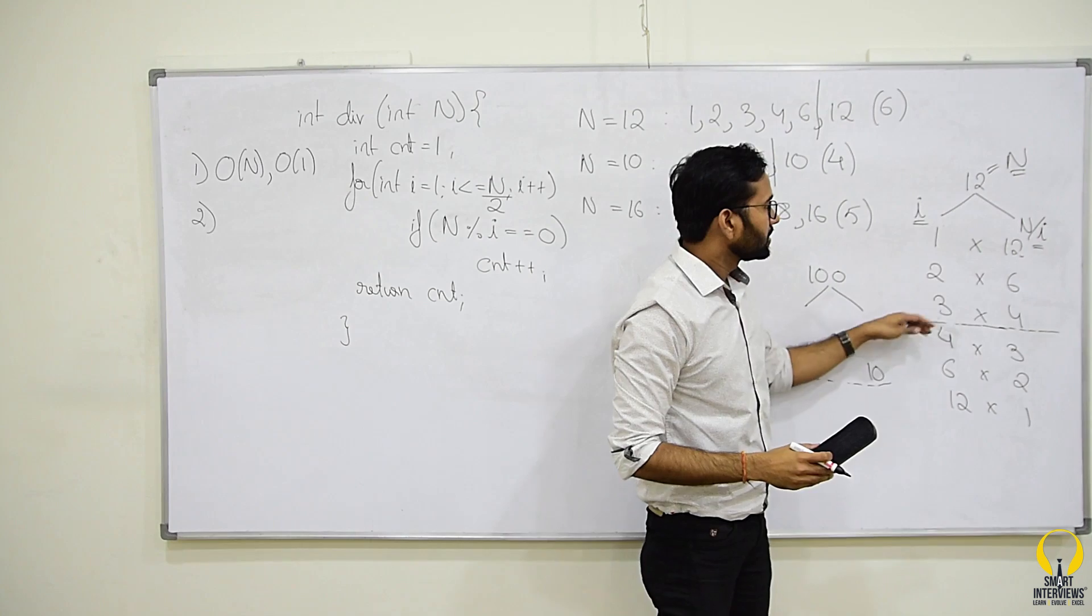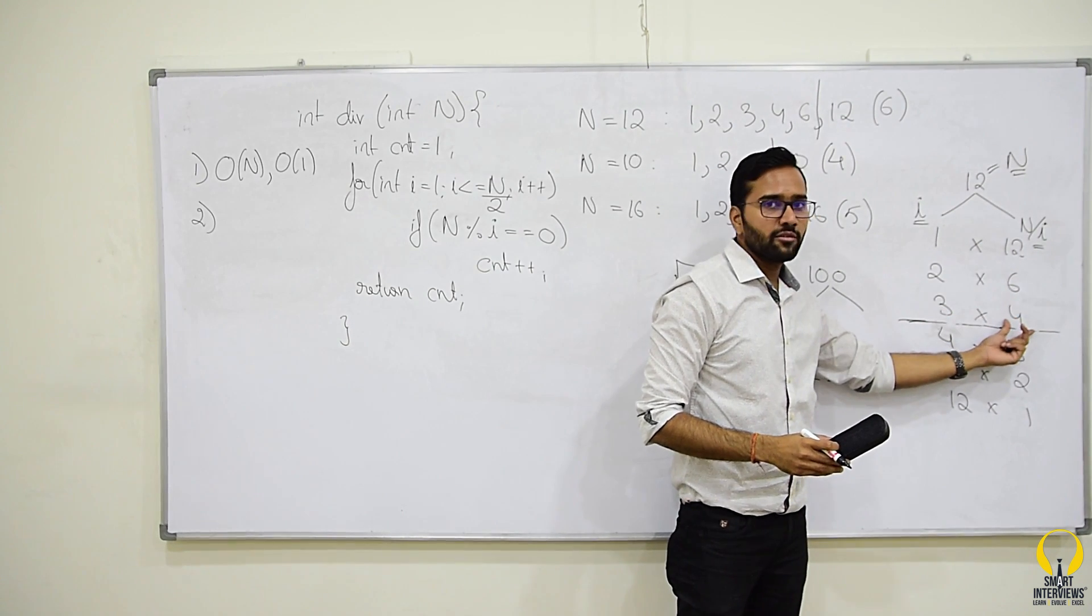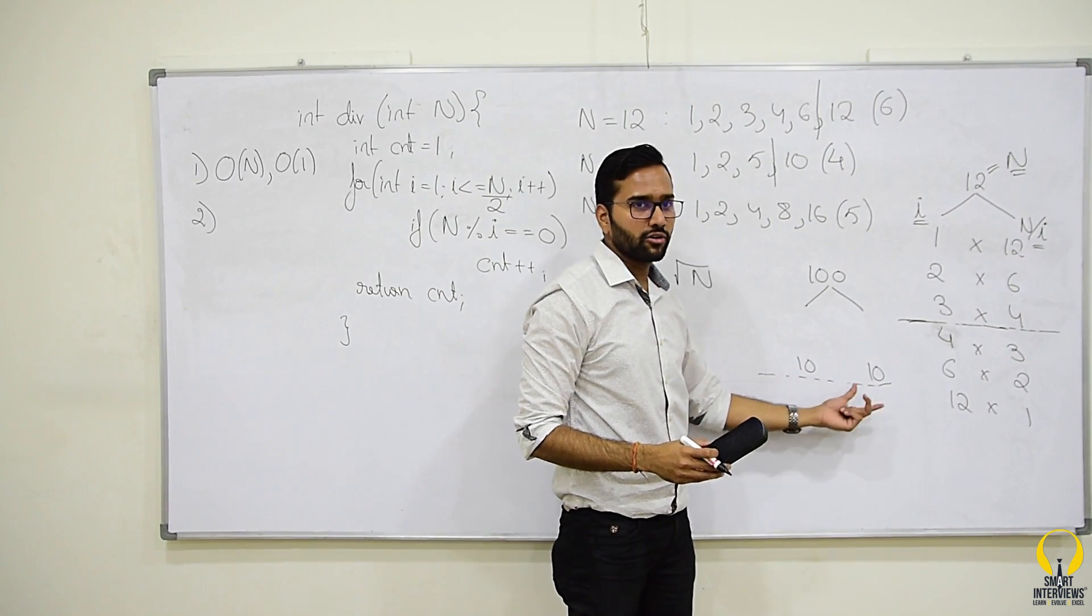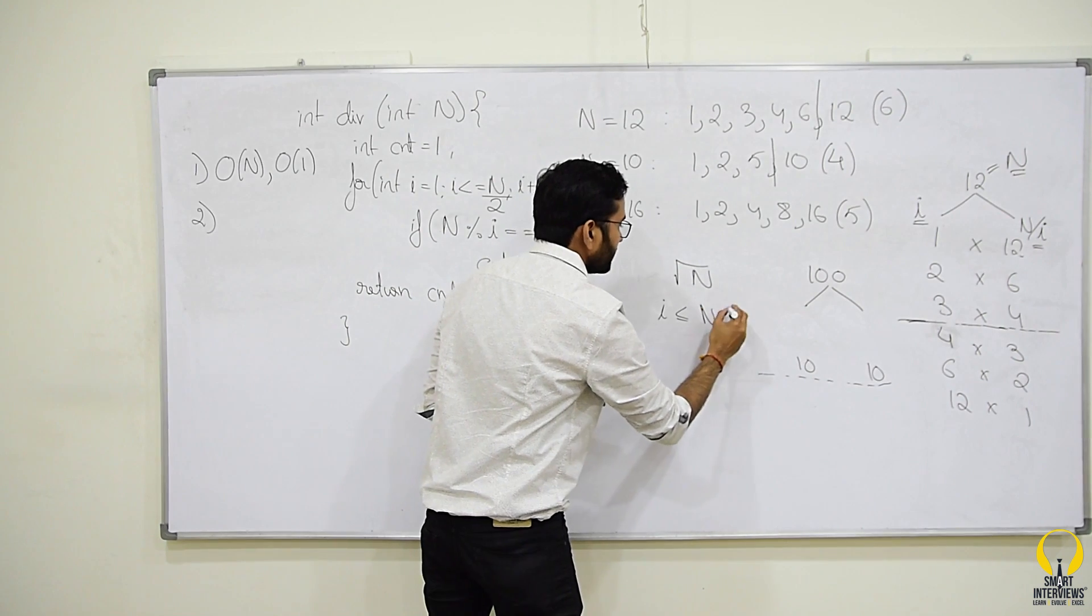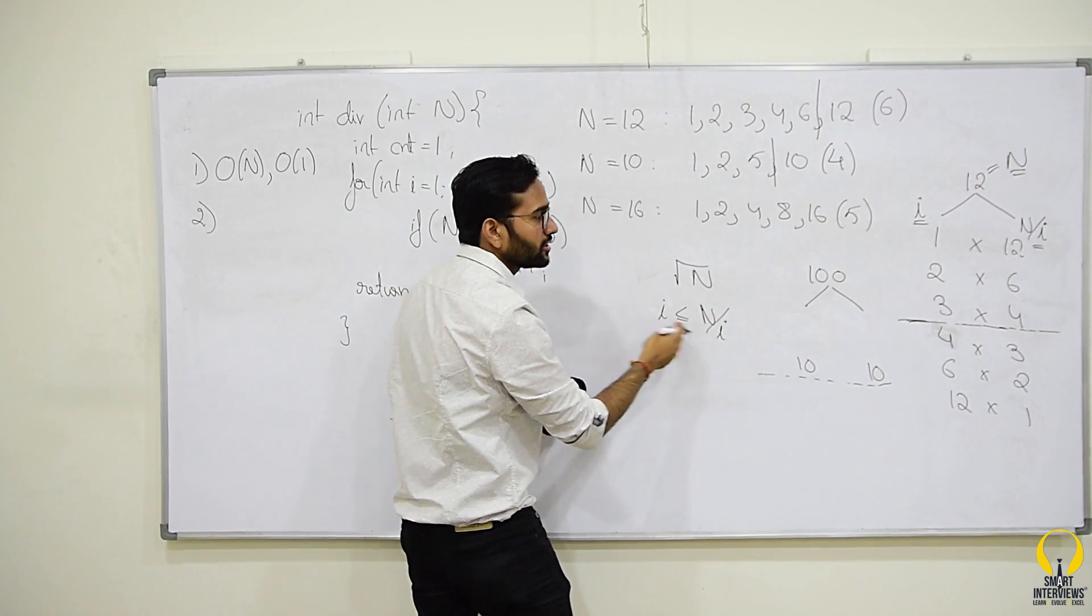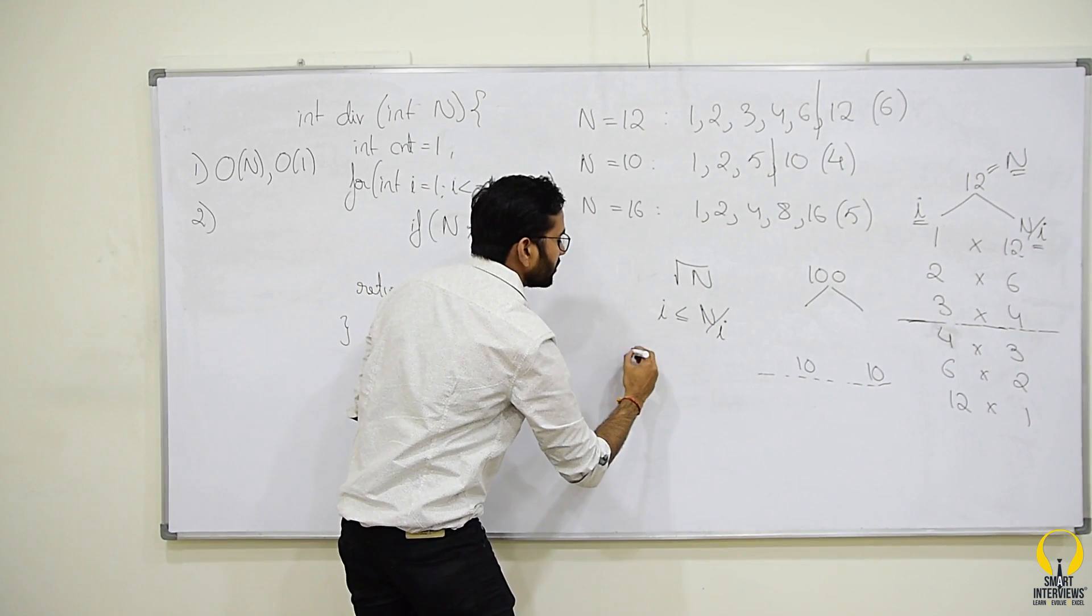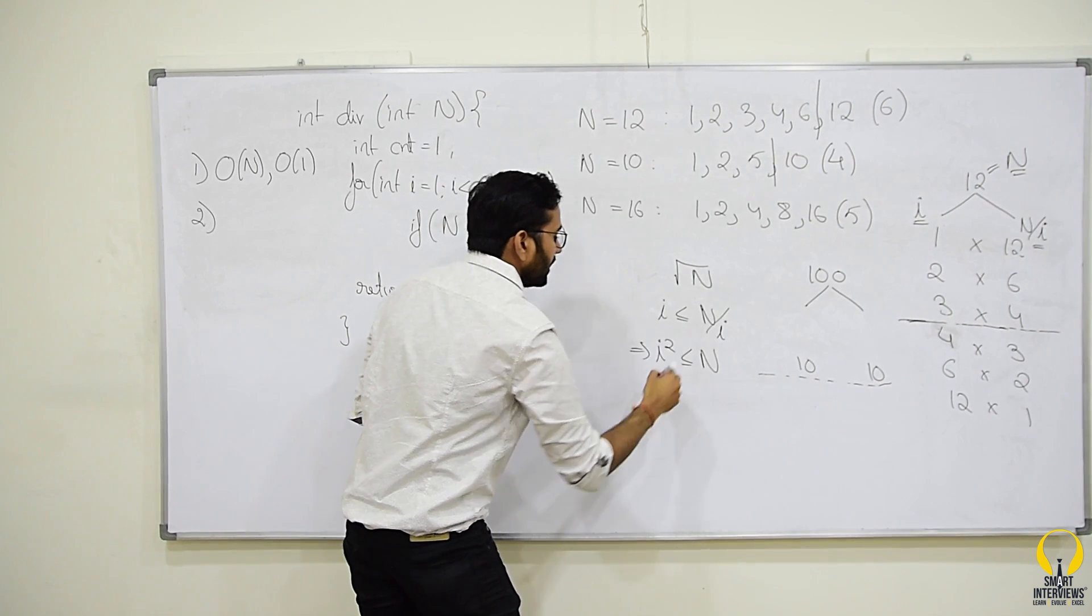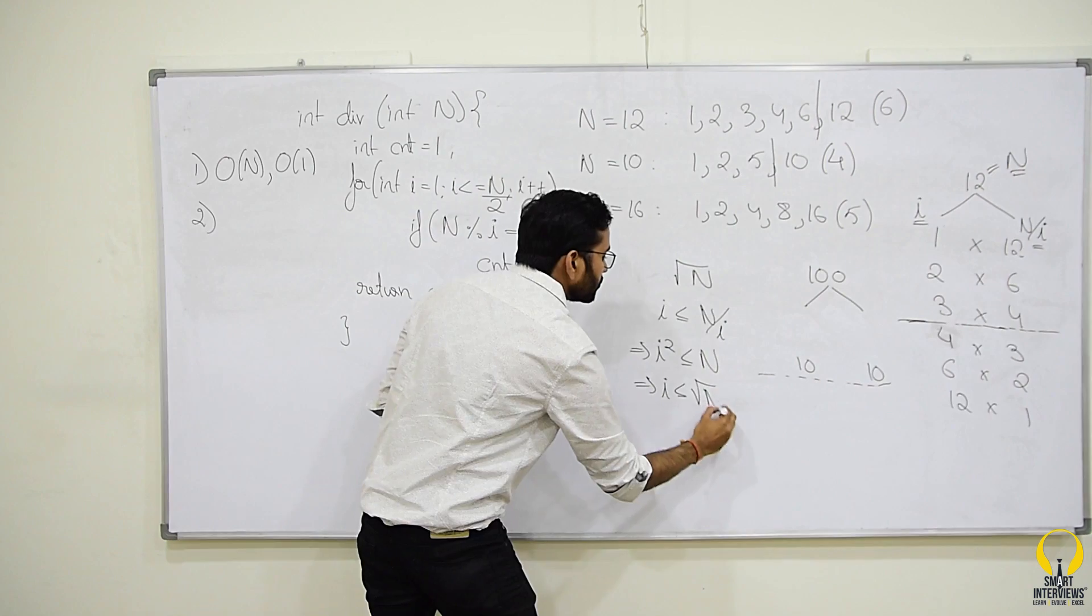Before this limit, the relation between them is i should be less than n/i, same thing here i should be less than equal to n/i. So, if i is less than equal to n/i, we already know n is the input. So, we have to figure out the limit of i. Unknown in this equation is i. If you solve for that, you will find i less than equal to n. If you simplify it, you will get i less than equal to root n.